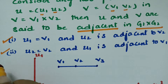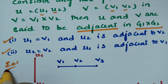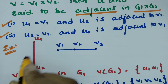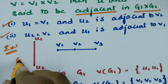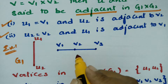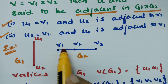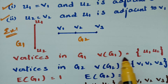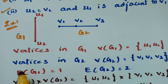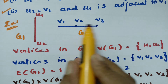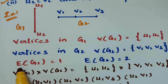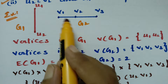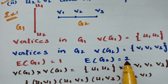Now let us look at an example for the product of two graphs. Graph G1 contains two vertices U1 and U2, and graph G2 contains three vertices V1, V2, and V3. The number of edges in G1 is 1 and the number of edges in G2 is 2.